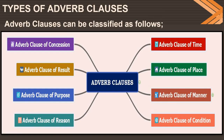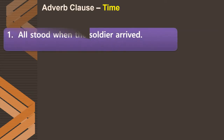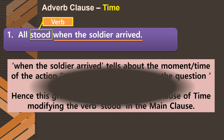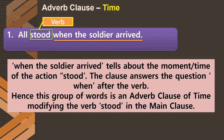Adverbs are of eight types, and so adverb clauses are also of eight types. The first type is the adverb clause of time. In 'All stood when the soldier arrived,' the clause 'when the soldier arrived' tells us when they stood up — it answers the question 'when' after the verb 'stood.' Therefore, this is an adverb clause of time.